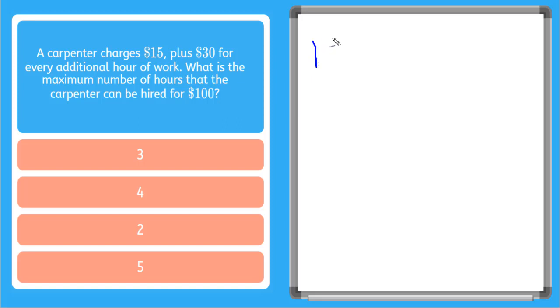So we know that the carpenter charges $15 just right off the bat plus $30 for every additional hour of work. So 30 times the number of hours is his total paycheck. But we only want to pay him $100. So the maximum we can pay is $100. So this has to be less than or equal to 100.